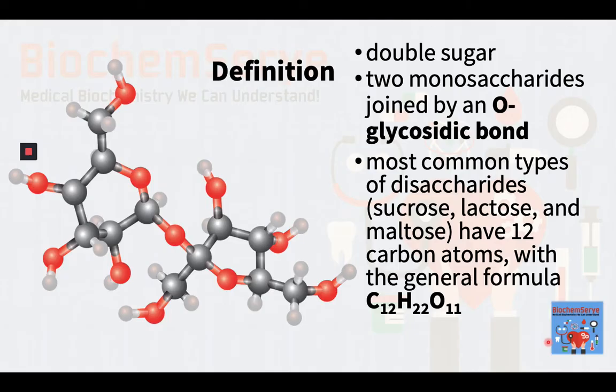Simply stated, a disaccharide, also called a double sugar, is the sugar formed when two monosaccharides, or simple sugars, are joined by an O-glycosidic bond. Disaccharides are one of the four chemical groupings of carbohydrates, which are the monosaccharides, disaccharides, oligosaccharides, and polysaccharides.